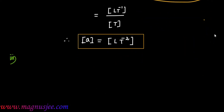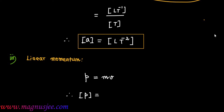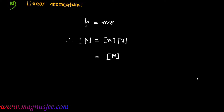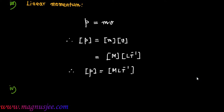Number 3: Linear momentum. Linear momentum is given by small p, which is the product of mass and velocity: p equals m V. Therefore, dimension of p equals dimension of m into dimension of v, which equals M into L T inverse. Hence, dimension of linear momentum p equals M L T to the power minus 1.